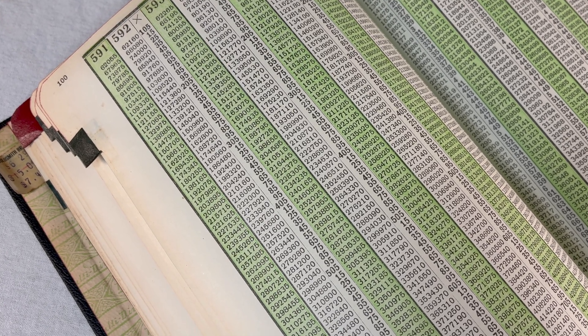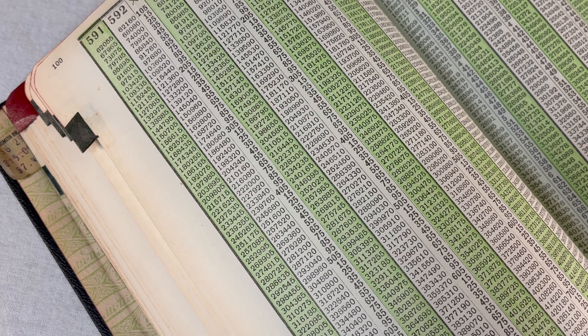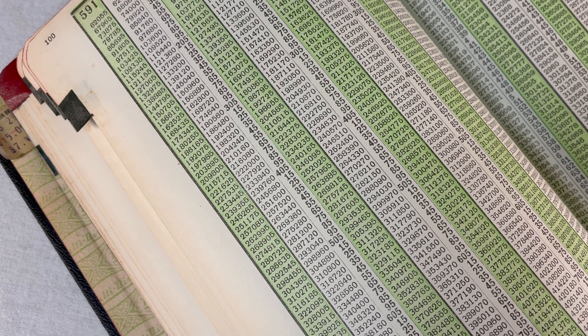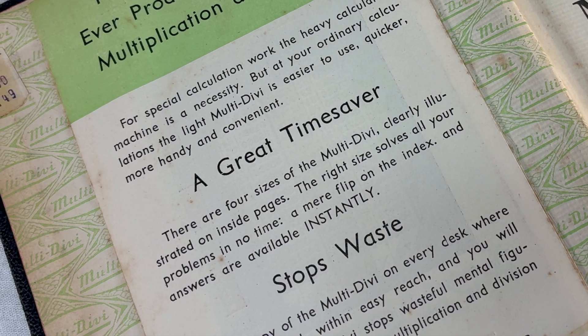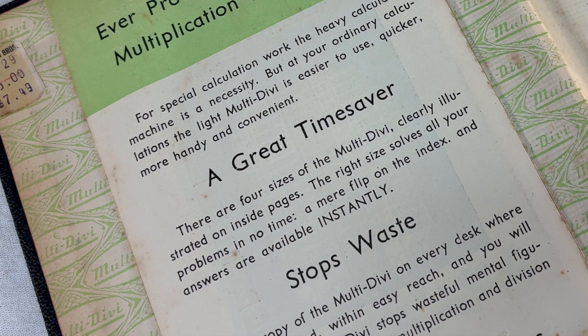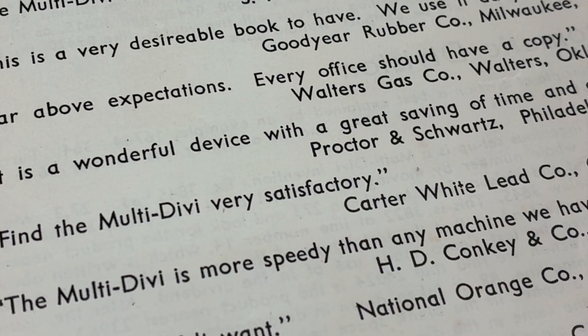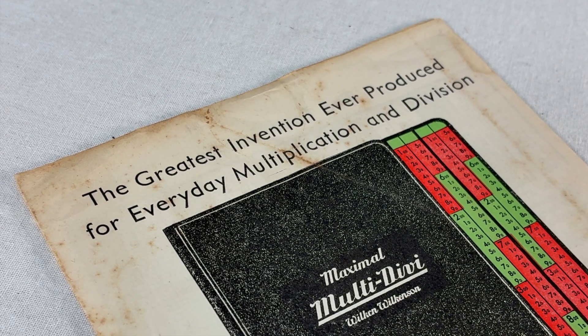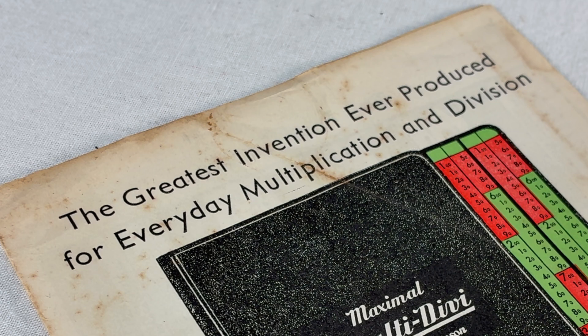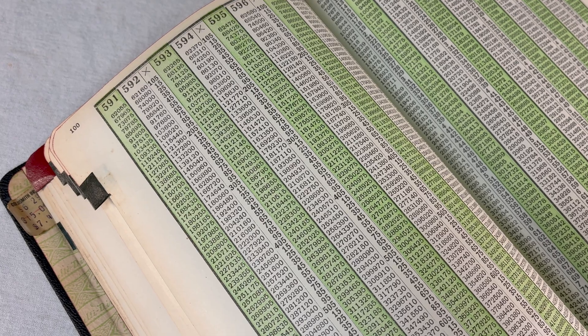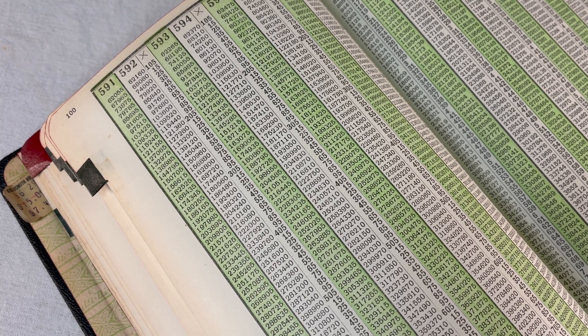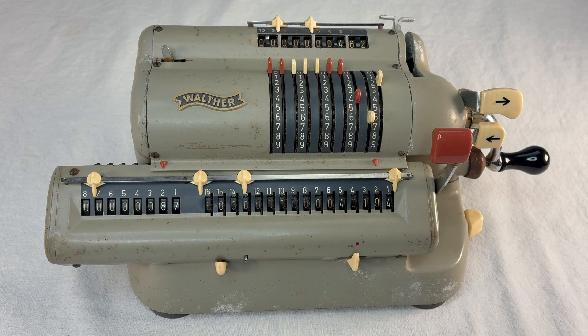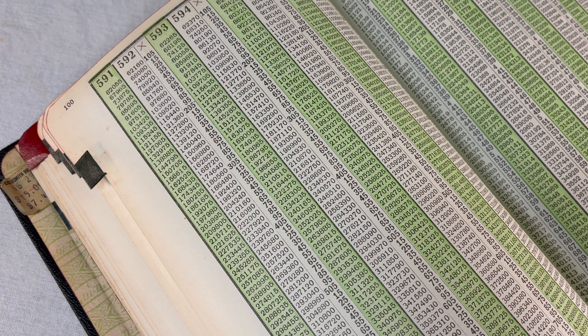Because the book is all just numbers, no words at all. So if you want to sell it somewhere else in a different translation, you just swap out the inserts. And this is some pretty classic early 20th century marketing materials. Mundane testimonials from real customers together with grandiose absurdities from the inventor. The greatest invention ever produced for everyday multiplication and division. This is certainly not true, even in 1911. A pinwheel machine would be far more useful in general. The obvious benefit of the multi-divi is that it's cheap and easy to use. And it is pretty fast, too.